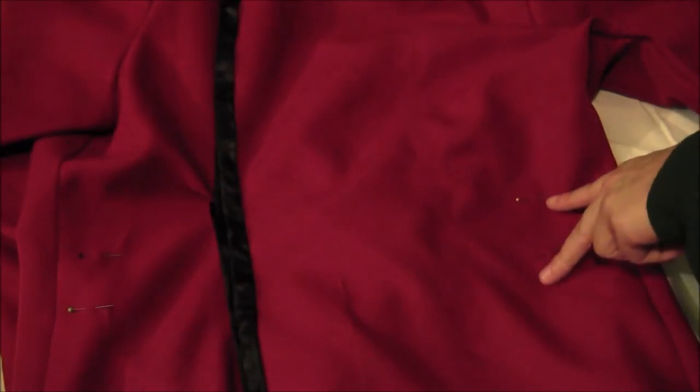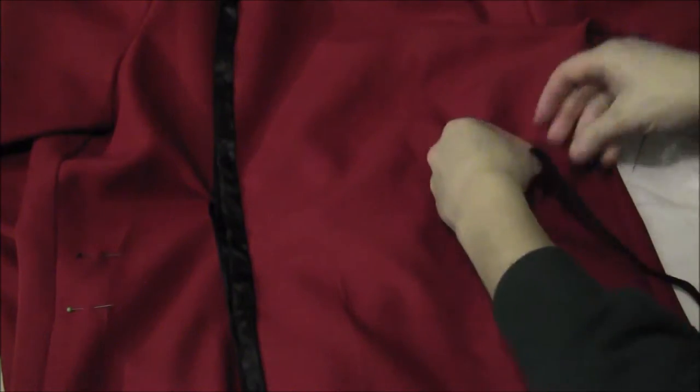Mark off where your waist is on your tunic with a couple of pins and then get yourself some black bias tape.